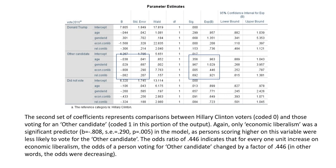For the second set of coefficients comparing the other candidate group against Hillary Clinton, again only economic liberalism was a significant predictor. The coefficient is negative, indicating that individuals who voted for an other candidate tended to score lower on economic liberalism. The odds ratio of 0.446 indicates that for every one unit increase on economic liberalism, the odds of voting for the other candidate change by a factor of 0.446 — so the odds were decreasing with increasing values on the economic liberalism measure.